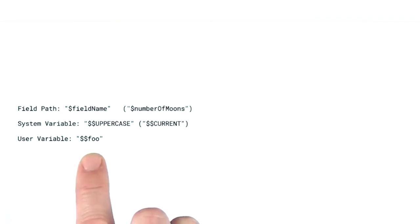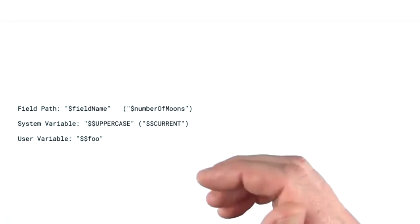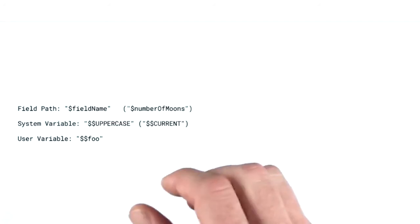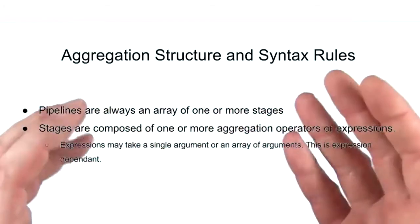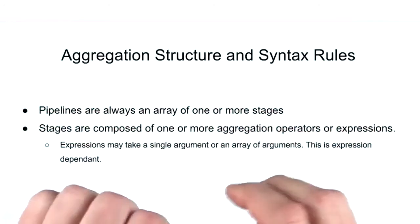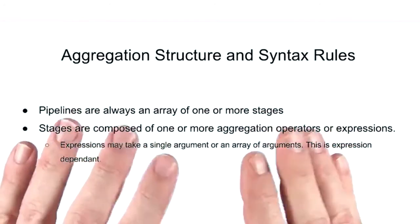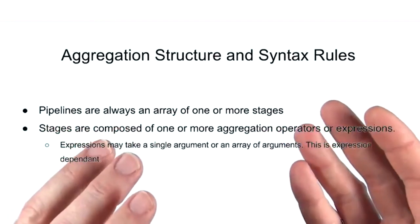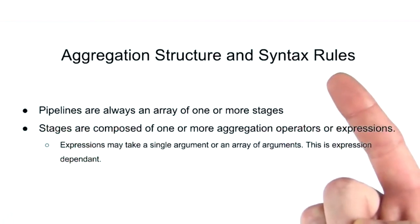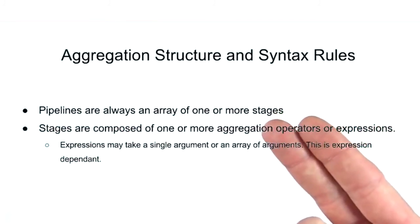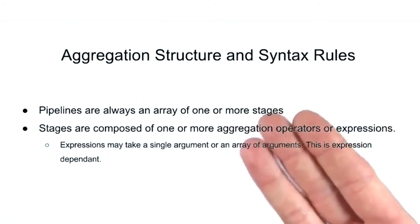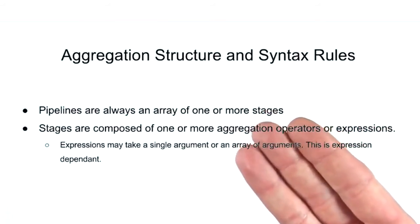We may encounter syntax with a single dollar sign for field path expressions to access the value of a field in the document. The second form, with two dollar signs followed by an uppercase word, is a system-level variable — for example, $$CURRENT refers to the current document. The last form, with two dollar signs followed by a lowercase word, is a user variable. Pipelines are always an array of one or more stages; stages are composed of one or more aggregation operators or expressions; and expressions may take a single argument or an array of arguments.